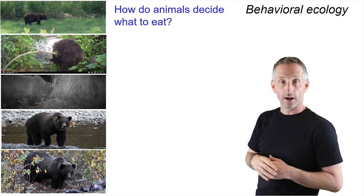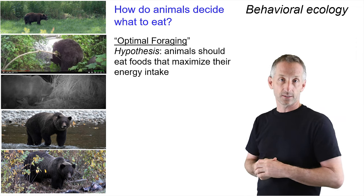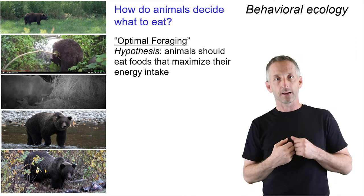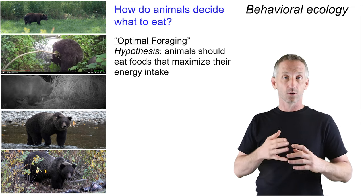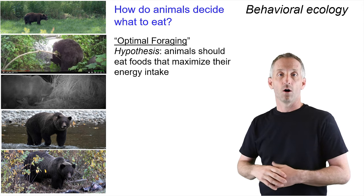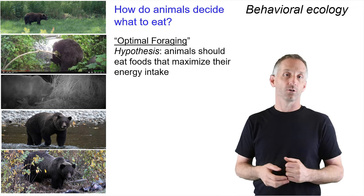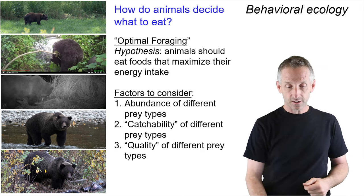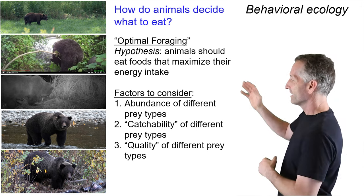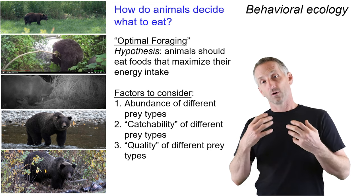The question of how animals decide what to eat and why they eat what they do is often placed in the context of optimal foraging theory, where the hypothesis is that animals should eat foods that maximize their energy intake. The presumption is that energy is limiting for most organisms, so you need to focus on the things that give you the most energy. Behavioral ecologists also consider how abundant different prey types are, how easy they are to catch, and their quality with respect to energy density or limiting nutrients.